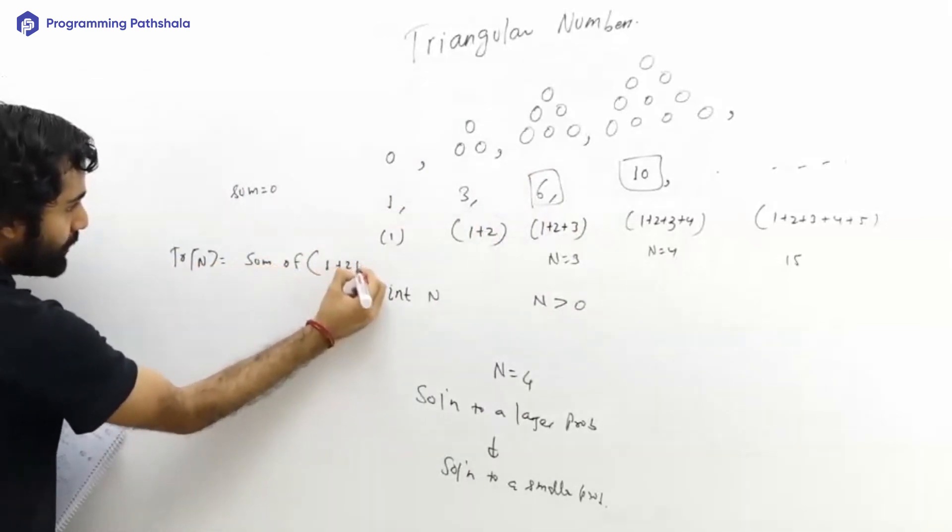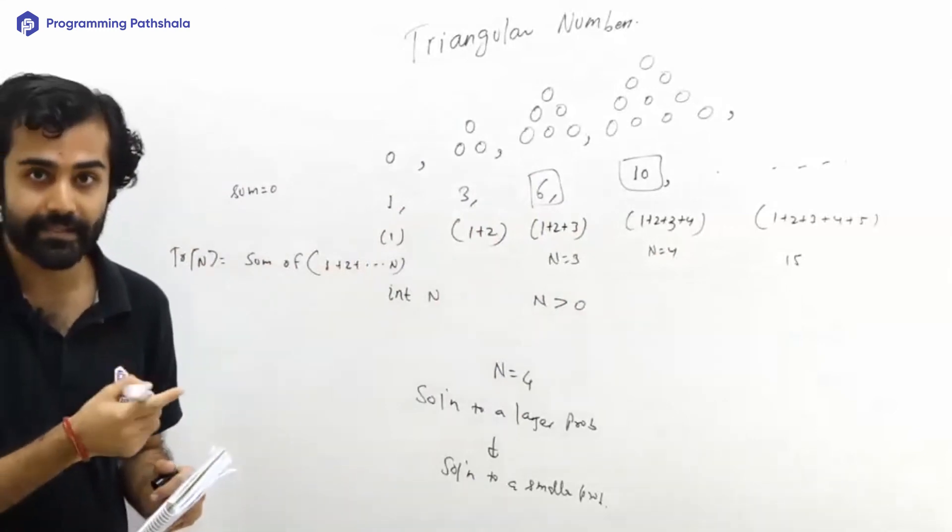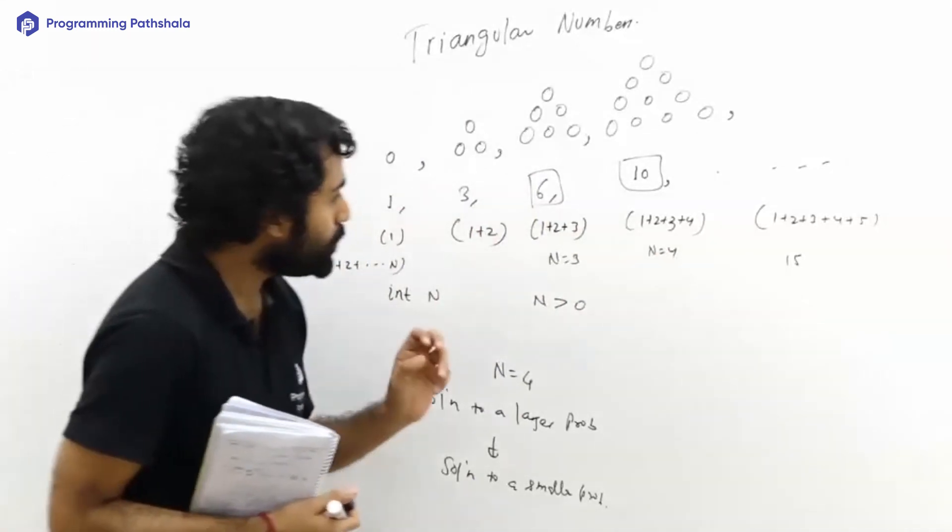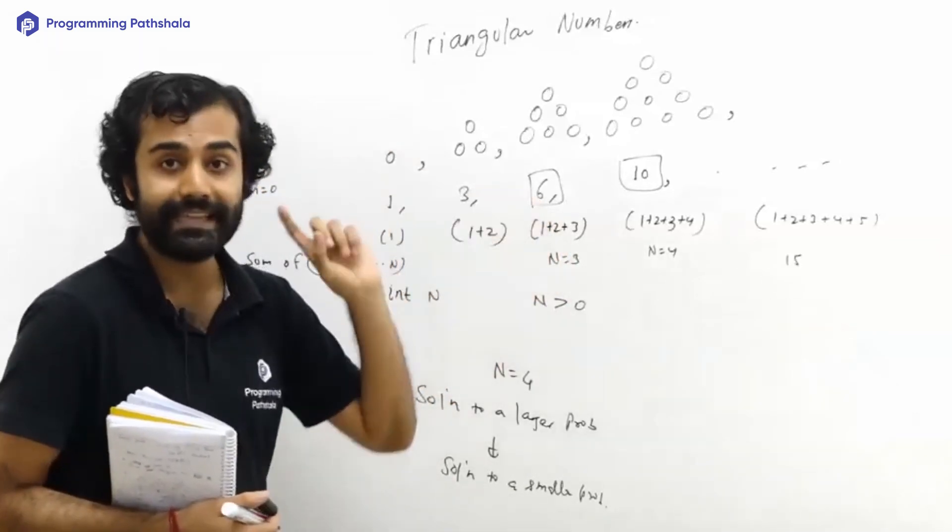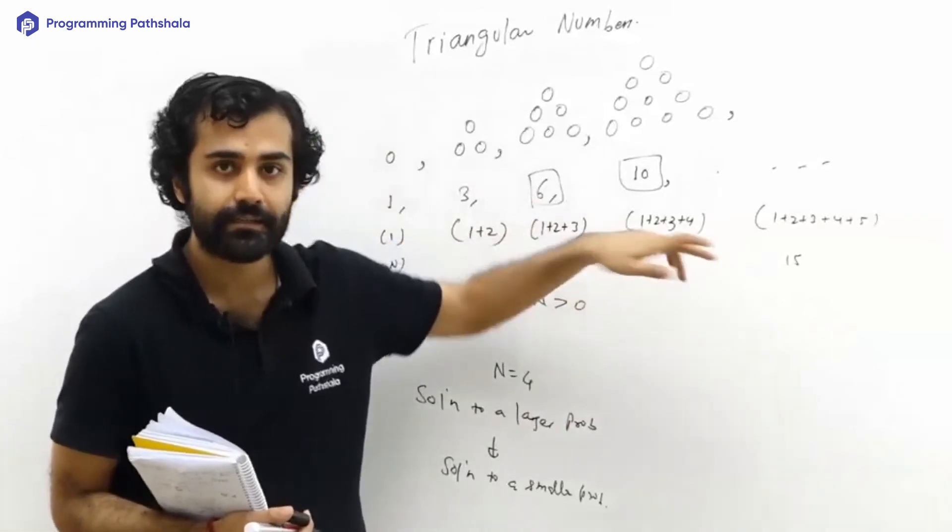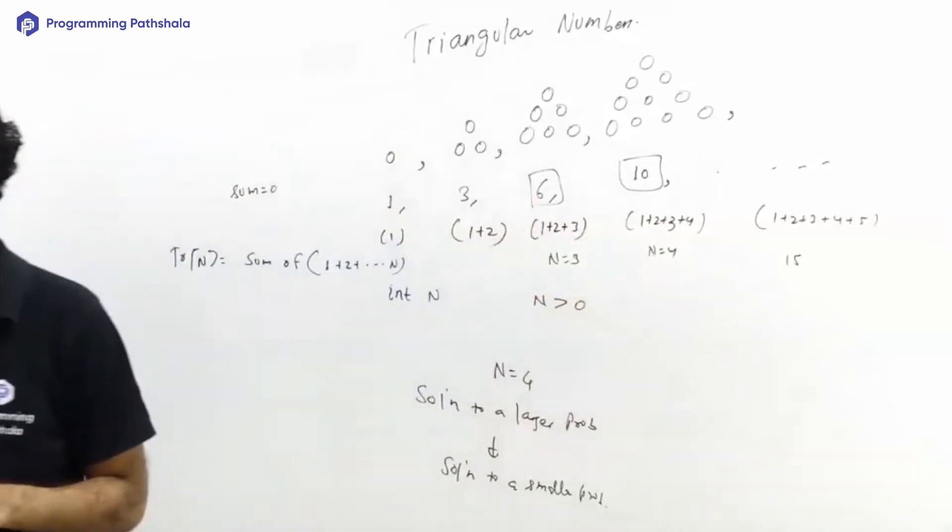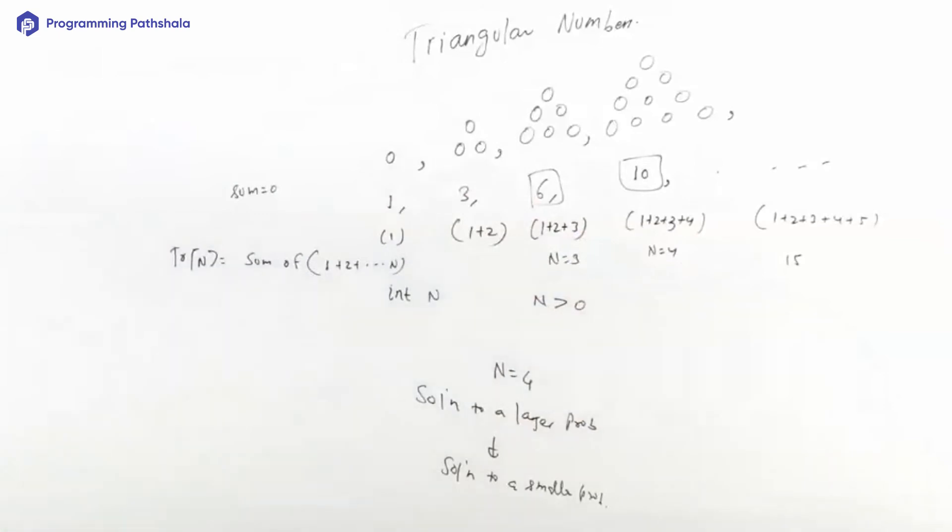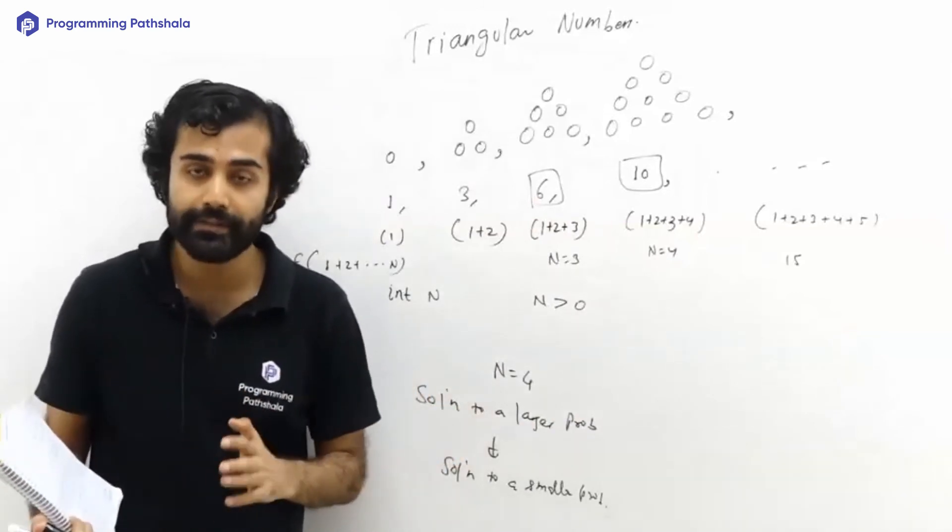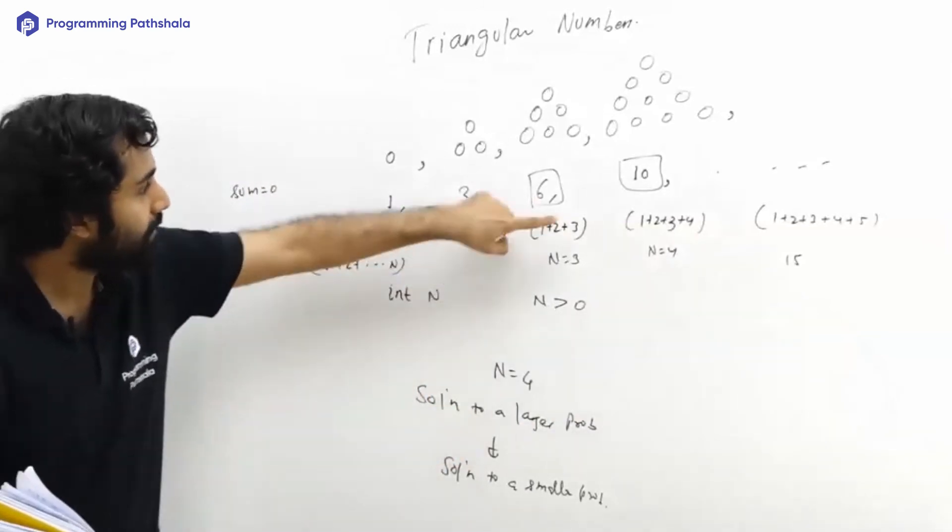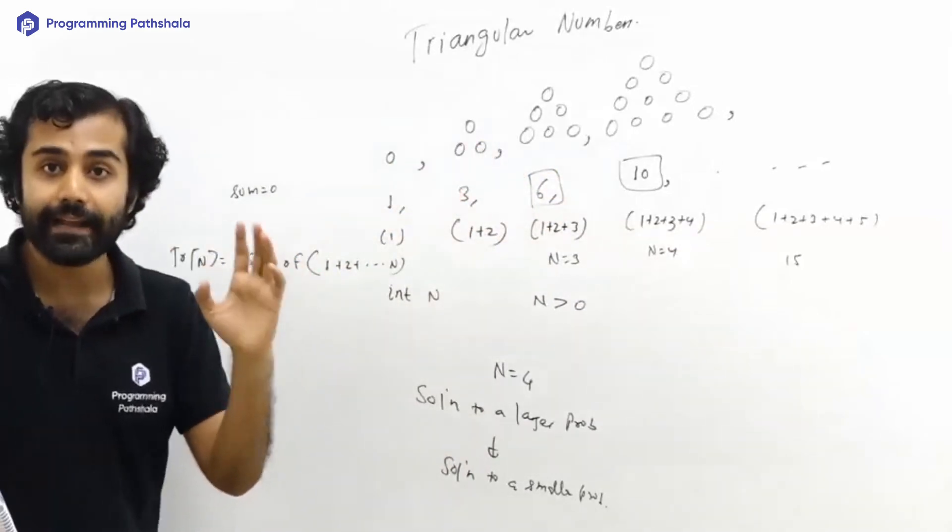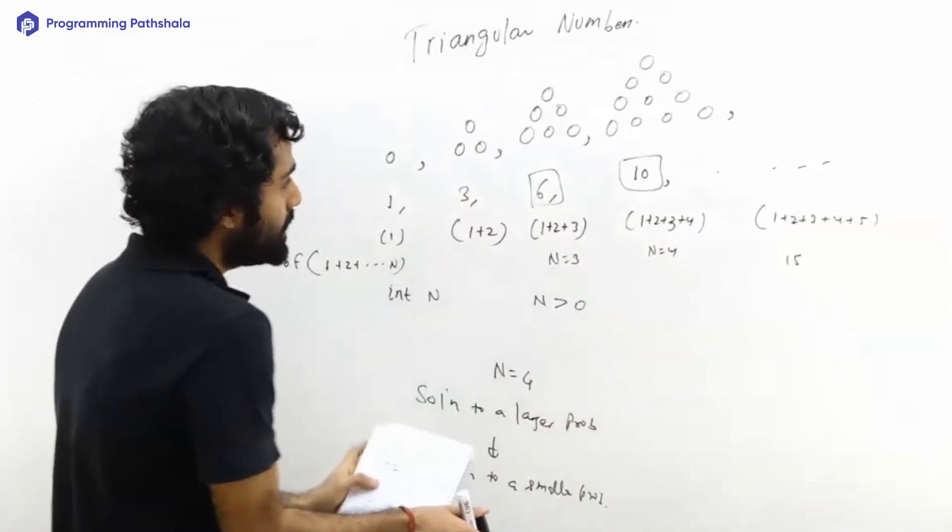Now think of it in this way: if you know what your third triangular number is, then in order to find your fourth triangular number, will you start counting from one again? Is that the right thing to do? That's not an efficient thing to do. That is correct, but that's not efficient. Because I know that if the n minus one triangular number is known, I can just add n to it and get my nth triangular number.